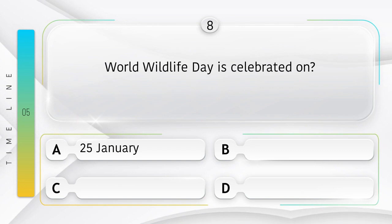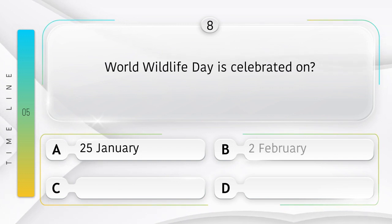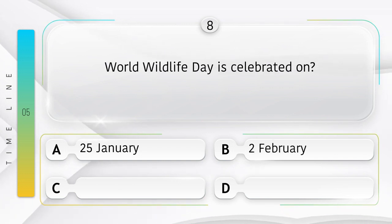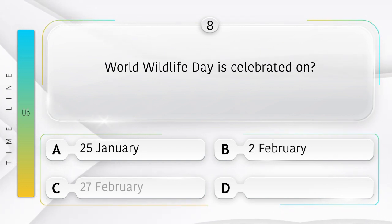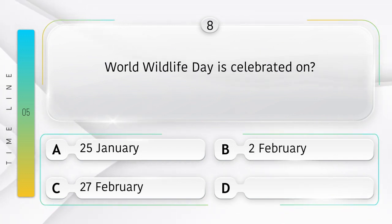World Wildlife Day is celebrated on: option A: 25th January, B: 2nd February, C: 27th February, D: 3rd March. Answer is option D, the 3rd of March.